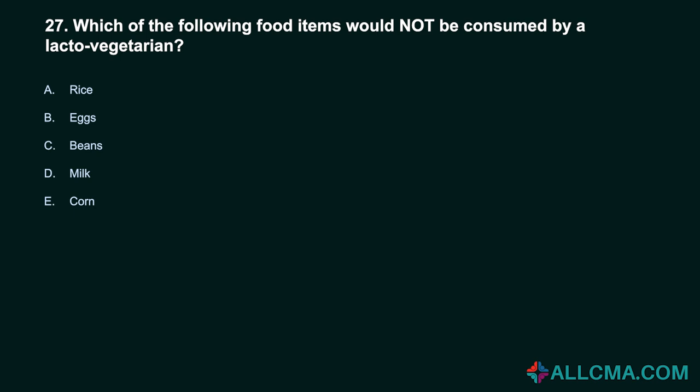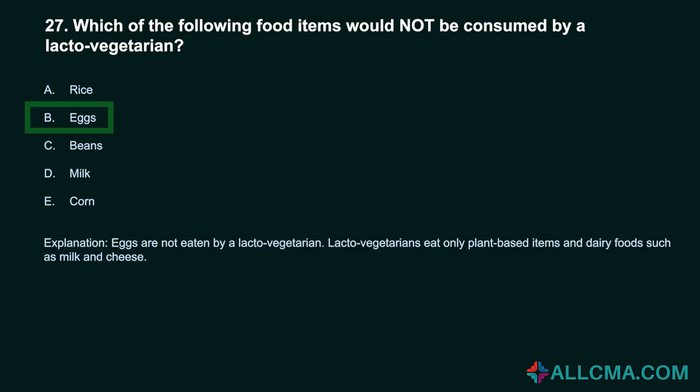Question 27: Which of the following food items would not be consumed by a lacto-vegetarian? A. Rice. B. Eggs. C. Beans. D. Milk. E. Corn. Correct answer: B. Eggs. Eggs are not eaten by a lacto-vegetarian. Lacto-vegetarians eat only plant-based items and dairy foods such as milk and cheese.